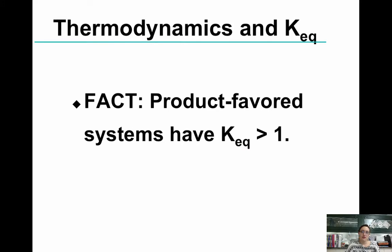If something is product favored, products are favored. And in a reaction where products are favored, the KEQ, the equilibrium constant, is greater than 1. Whether this KEQ is KC, KP, KA, KB, KSP, no matter what, it's always greater than 1.